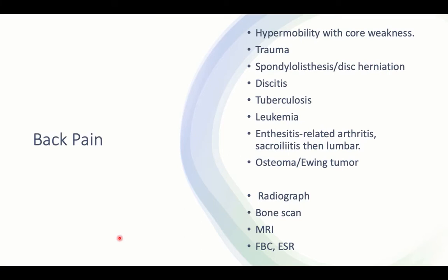Back pain is a common presentation in childhood and can be related to hypermobility, trauma, spondylitis, TB of the vertebral column, leukemia (presenting with musculoskeletal manifestations in 60% of cases), ankylosing spondylitis as a form of JIA, or tumors like Ewing's tumor and osteoma. Workup includes plain radiograph, MRI of the spine, and full blood count with ESR.